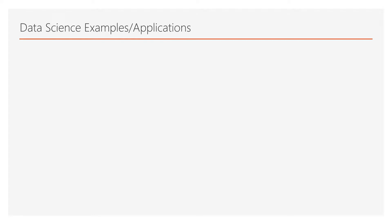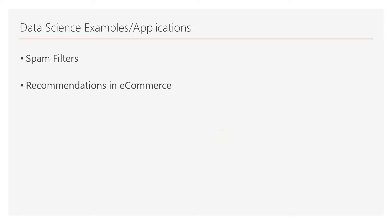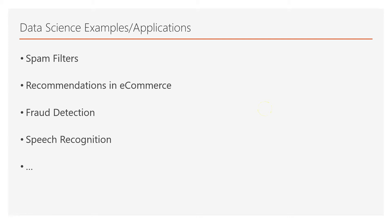Let's see some real-life examples and applications of data science. For example, spam filters now use data science. Also, recommendations in e-commerce — if you visit an online store and buy some products, data science allows the store to recommend other similar products. Fraud detection and speech recognition are other applications, and the list goes on.